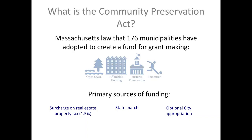The CPA, or the Community Preservation Act, is a Massachusetts law which has so far been adopted by 176 communities. This law allows these communities, including the city of Somerville, to create a fund for grant making. The law says that these funds can go to support four categories: the open space category, affordable housing, historic resources, and recreation land. Under the recreation land, it can only support outdoor recreation land projects.